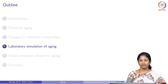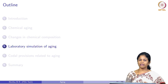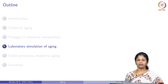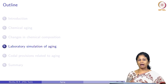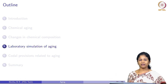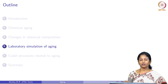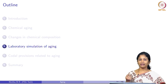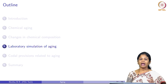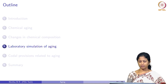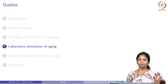In today's class we will see the methods available for laboratory simulation of aging in bituminous binders and bituminous mixtures. Why do we need laboratory simulation of aging? Aging is a process which happens over a period of time. To quantify the effect of long-term aging, we would have to wait about 7 to 8 years, which is not practically possible. So we need to do some accelerated testing in the laboratory. For that purpose we perform laboratory simulation of aging separately on binders and mixtures.